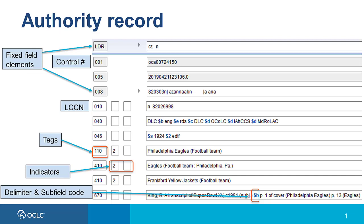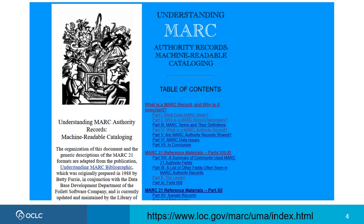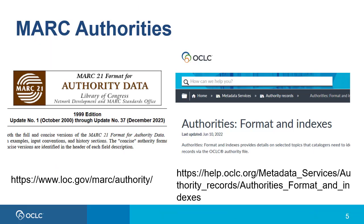MARC authority records, like MARC bibliographic records, contain fixed field elements — a leader and an 008 — and variable fields. The variable fields consist of three-character tags, two indicators, and two subfield characters, a delimiter and a subfield code, which precedes the subfield data. You can find much more information about MARC authority records on the LC website, Understanding MARC Authority Records, and detailed help for each field in LC's MARC 21 format for authority data and OCLC's authorities format and indexes.